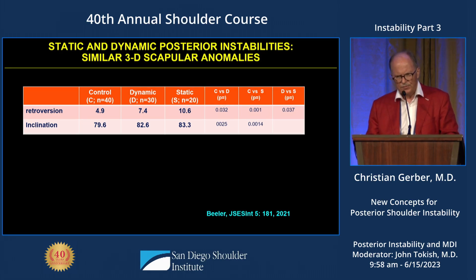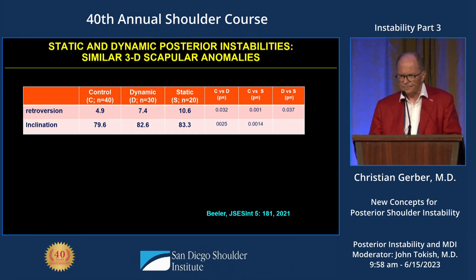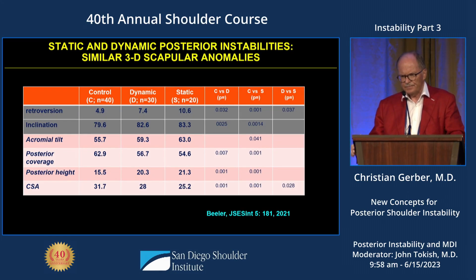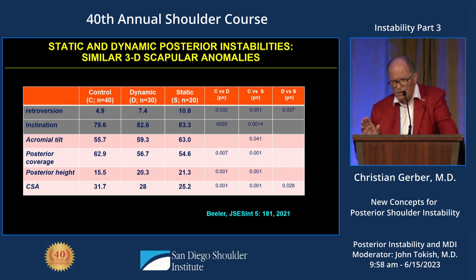What we had not known was that the posterior instabilities have a more inferiorly inclined glenoid. You may say it's not that much, but it's 4 to 5 degrees — and 4 to 5 degrees you would correct in a total knee. But then we looked at the acromion: the acromion tilt was very different between the normals and the instability cases, the posterior coverage was highly significantly different, and the posterior height was sort of day and night.